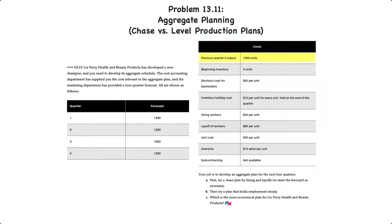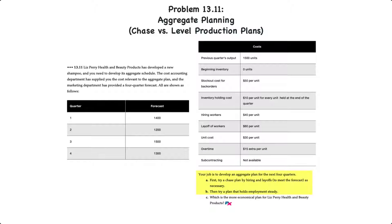Additional information shows that the previous quarter's output is 1500 units, there's no beginning inventory, the stock-out cost for back orders is $50 per unit, the inventory holding cost is $10 per unit at the end of every quarter, hiring costs are $40, layoff costs are $80 per unit, the unit cost of production is $30, overtime is $15 per extra unit, and subcontracting is not available.